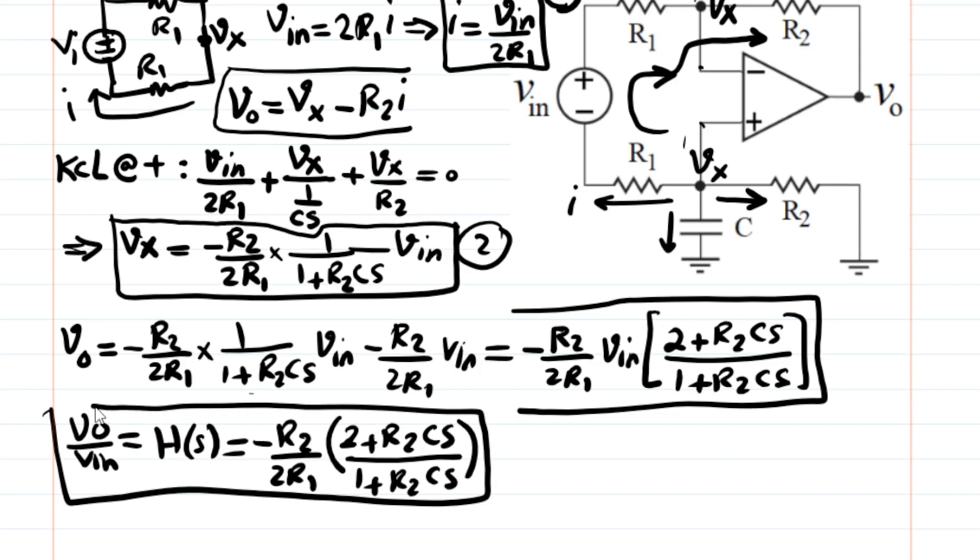Okay. So this is exactly confirming our intuition because look at what we got. So at DC, S, which is j omega, omega is zero at DC. And therefore, what remains in numerator is 2. What remains in denominator is 1. So 2 cancels out with 2 here in denominator at DC. So what you get is at DC,